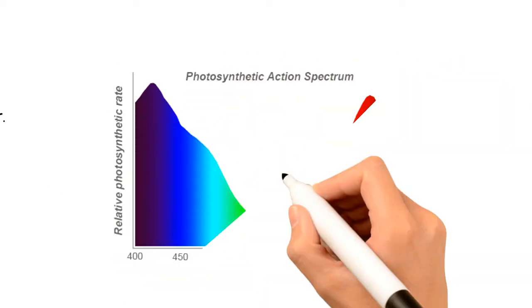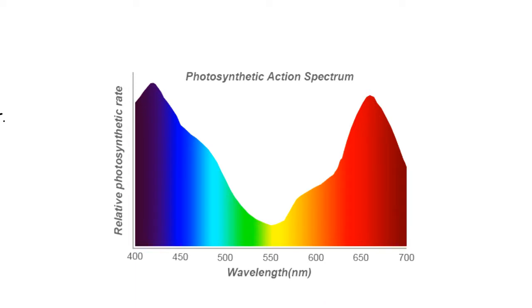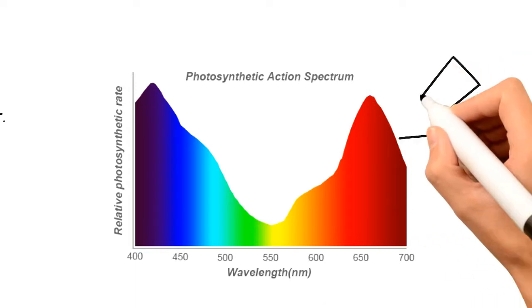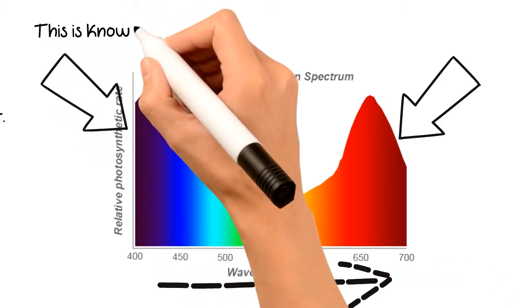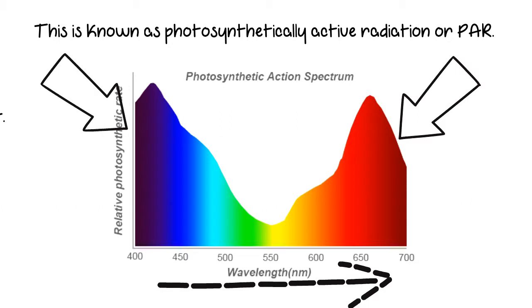Let's look at what plants see. Plants clearly use light from different parts of the spectrum than what humans use. The human eye response discounts red and blue light, while the action spectrum shows that plants are receptive down to 400 nanometers and up to 700 nanometers. This is known as photosynthetically active radiation, or PAR.